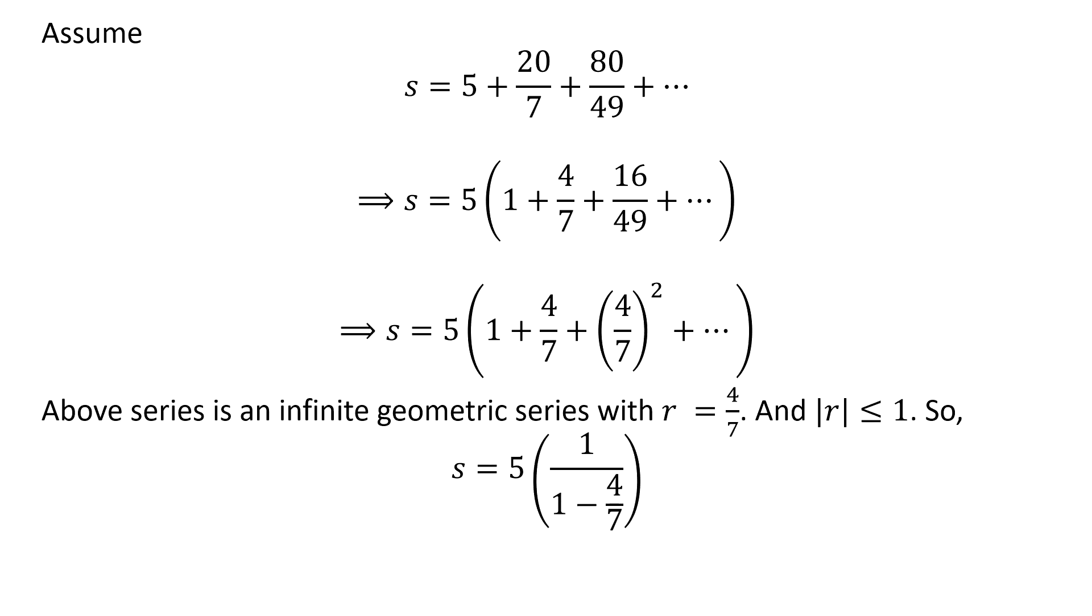As the above series is a geometric series with common ratio 4 upon 7 and common ratio is less than 1, so sum of the series is 5 times 1 upon 1 minus 4 upon 7.